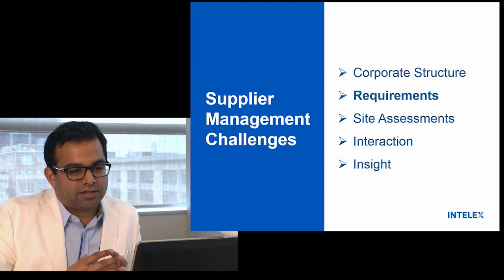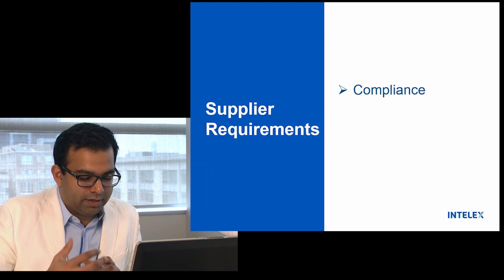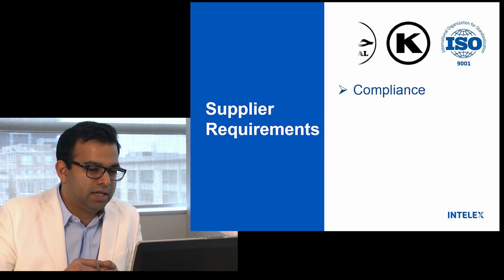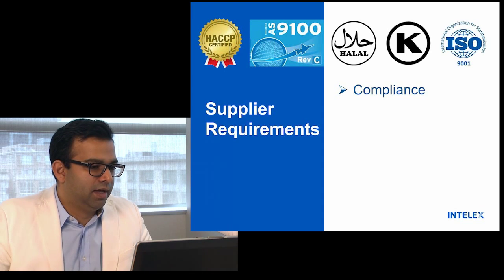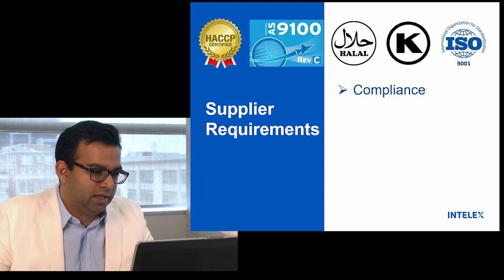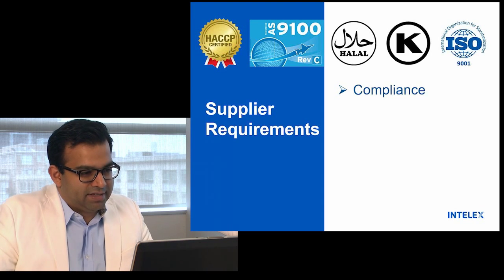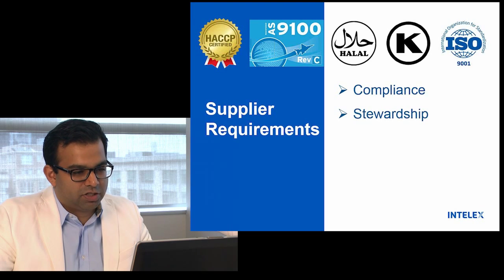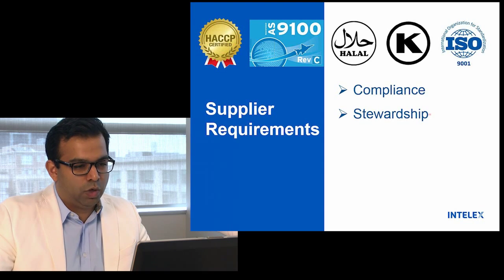The second challenge that we come across has to do with requirements. As a supplier, most of the requirements have to do with compliance. We can think about compliance in terms of quality — ISO 9001 certification, compliance for kosher-related products, halal products, HACCP-certified products, and if you're in the aviation sector, AS9100 as a quality standard. But it's not just compliance we're worried about. Today we evaluate the performance of a supply chain not only by compliance, but also by stewardship — and what we really mean by stewardship is sustainability.